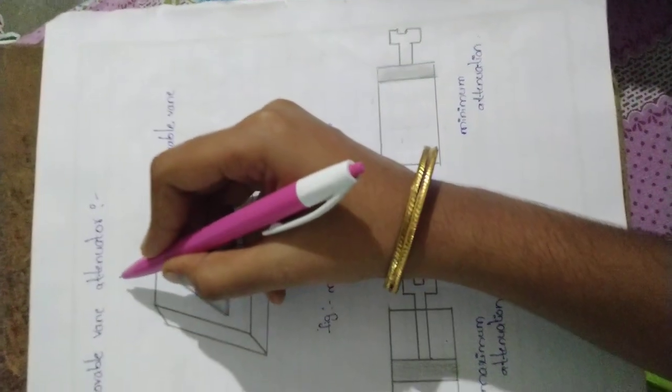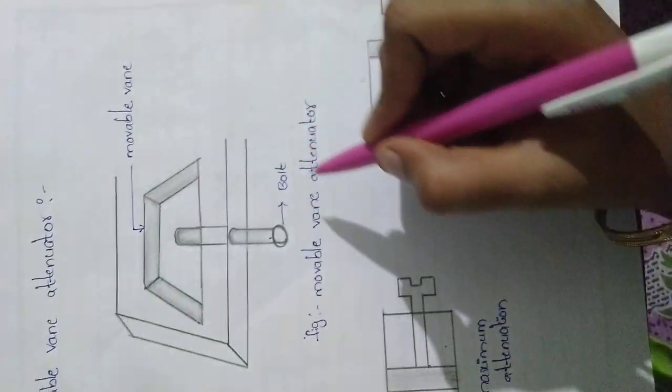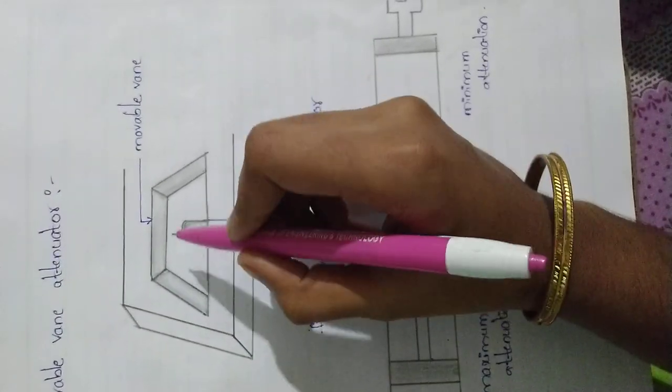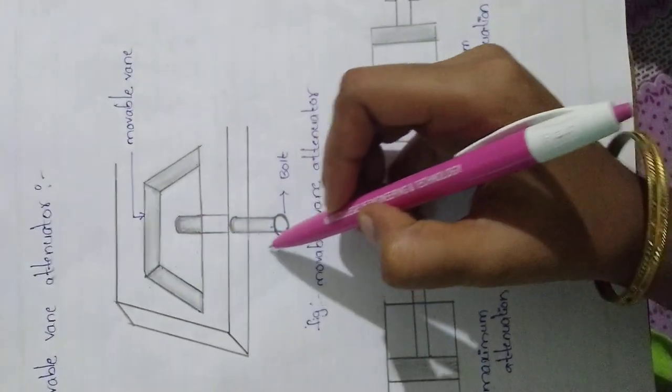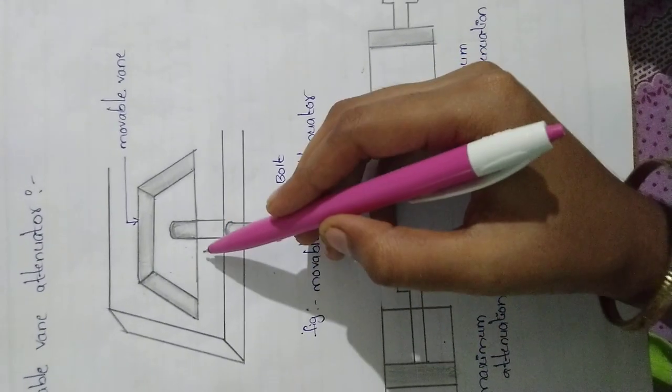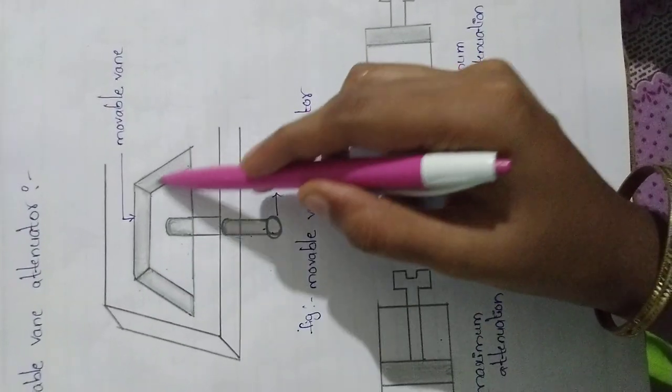Movable Vane Attenuator - this is the figure of the Movable Vane Attenuator. It consists of a movable vane which can be adjusted by a bolt. In Movable Vane Attenuation, the variable attenuation depends on the position of the movable vane.